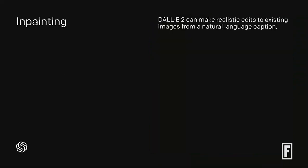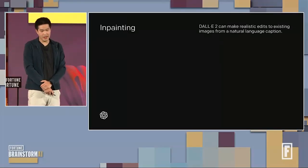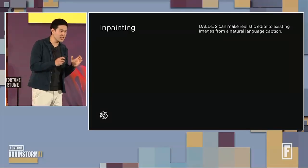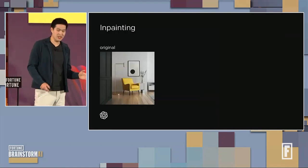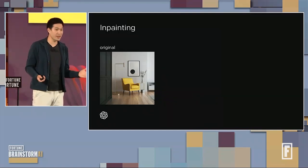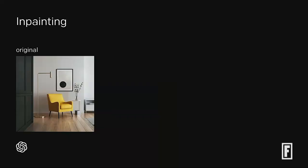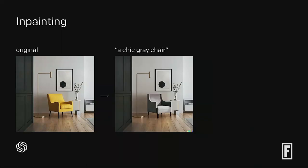Text-to-image isn't the only capability of DALL-E. There's also inpainting, in which you can make realistic edits to existing photographs. For example, say I start with an image of a yellow couch in a modern living room and I want to change it to a chic gray chair. I can mask out the middle part of the image and ask for a chic gray chair and get one in its place. Notice that this respects all the lighting and shadows implied by the original image — the light's coming from the right side, and the shadows are generated appropriately.